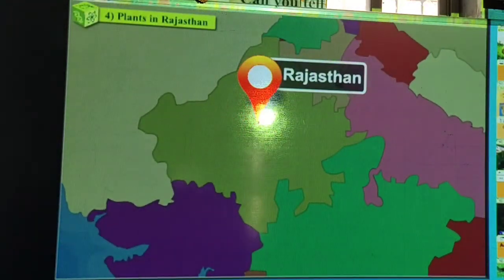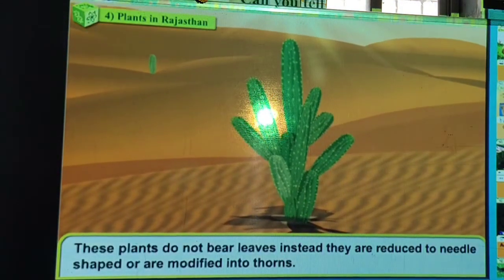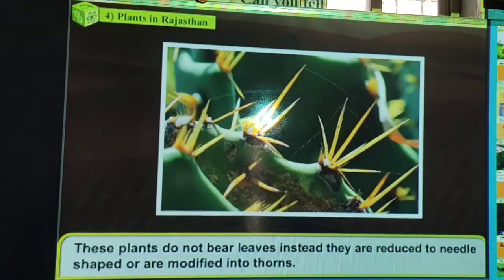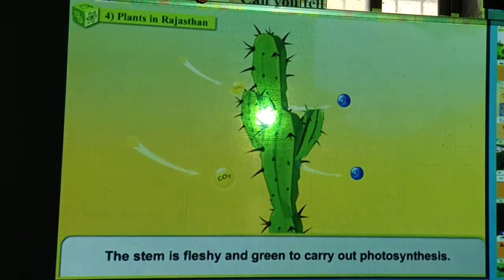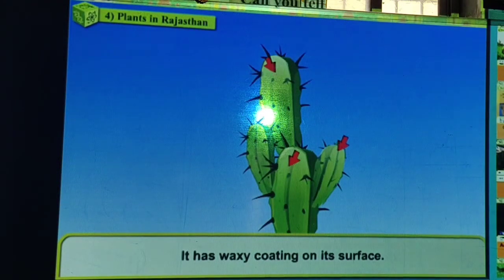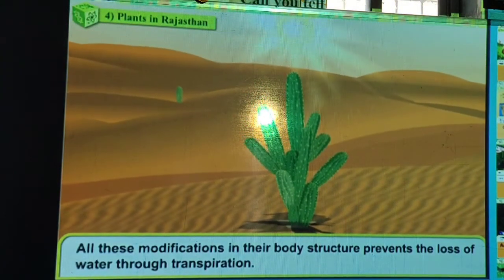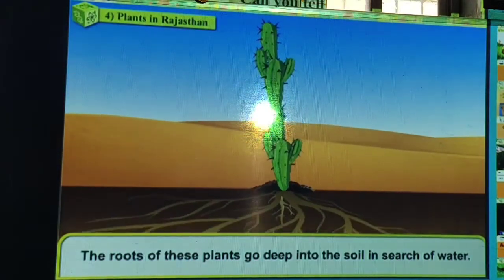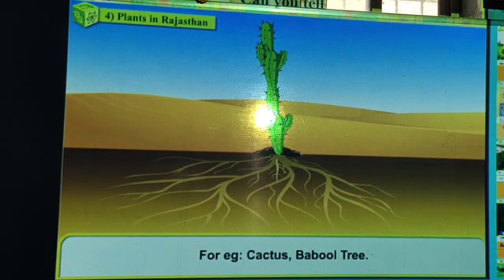Plants in Rajasthan — only spiny plants are present there. These plants do not bear leaves; instead they have thorns. The stem is fleshy and green with a waxy coating on its surface. Leaves are converted into thorns, and the roots of these plants go deep into the soil in search of water. For example, cactus and babul tree.